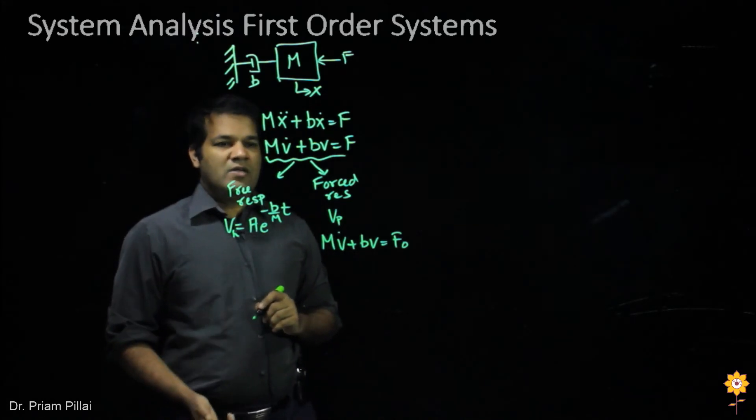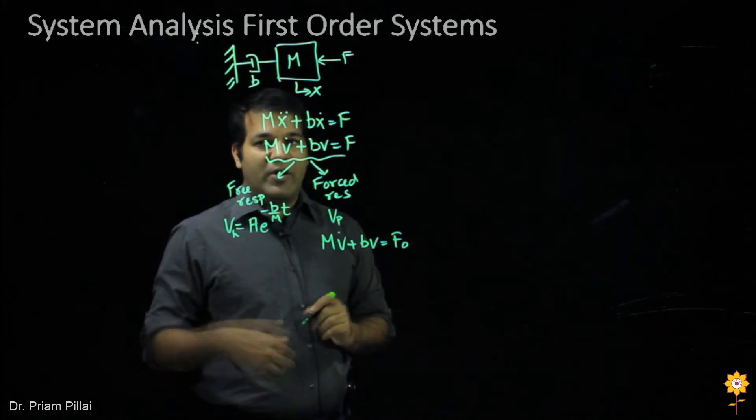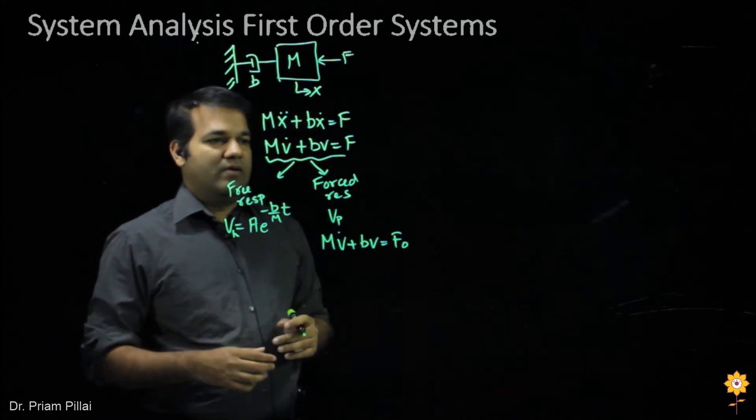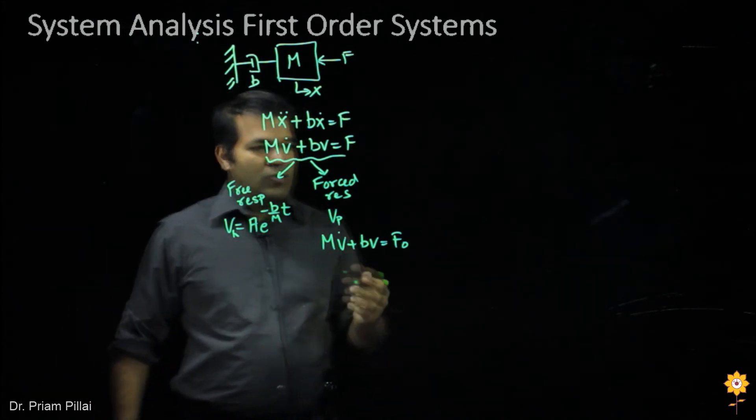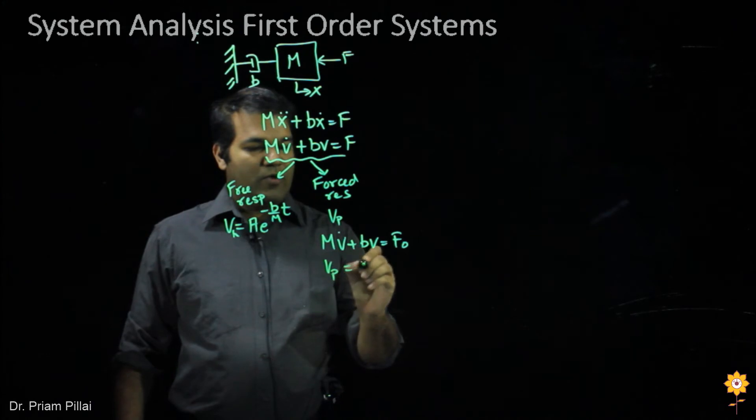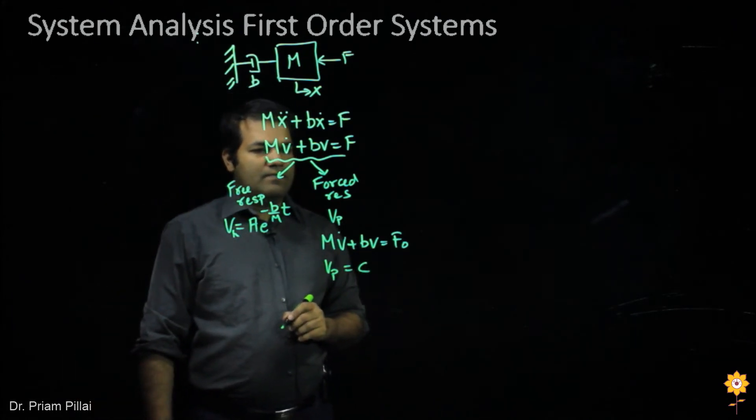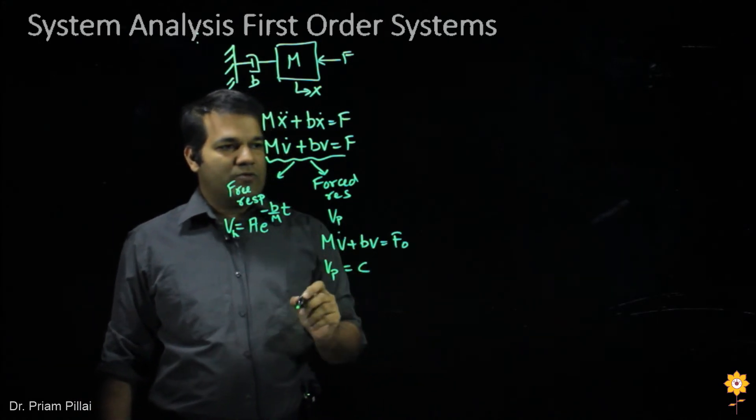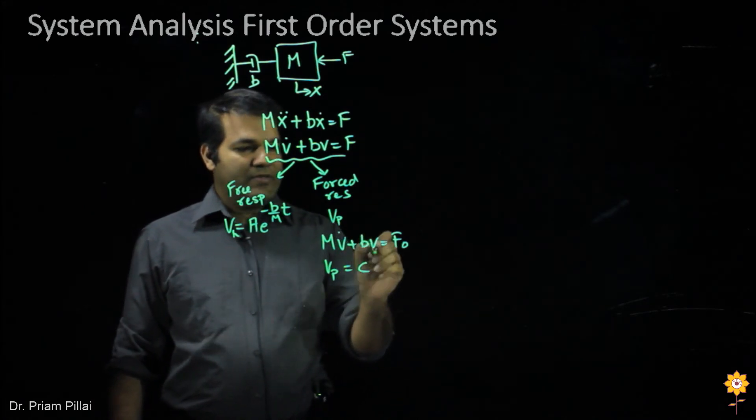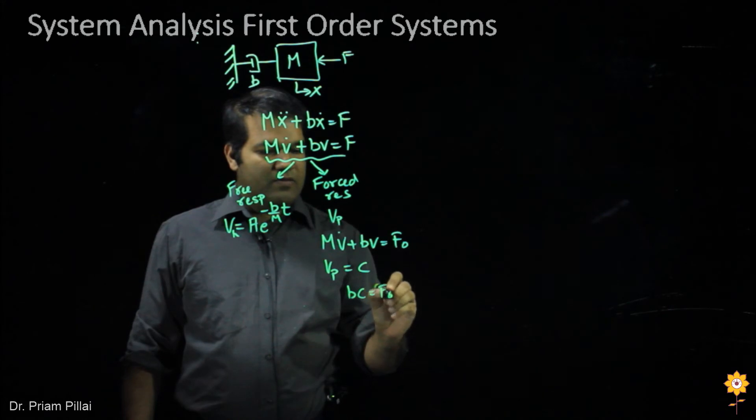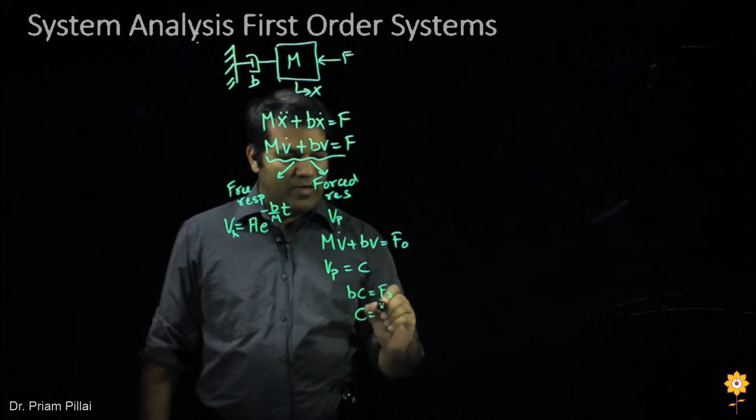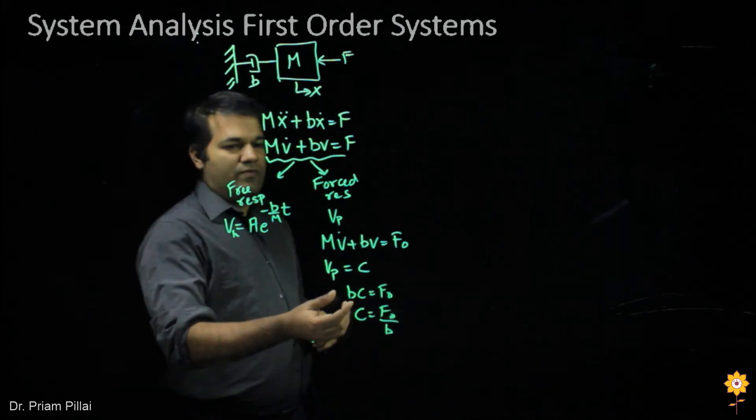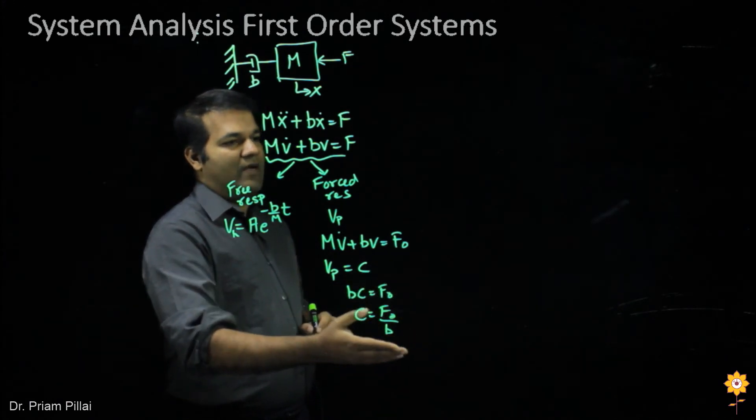Let's assume that we put an input force of f0 into the system. You might recall from your differential equations class that the solution to this will be given by the particular solution to this equation. A particular solution is any solution that would satisfy this equation. So let's assume vp is some constant c. When we substitute that into this expression, we get v dot equal to 0, and then b times c equals f0. So c would just simply be f0 divided by b. So a particular solution is just the input force divided by the damping coefficient in this case.